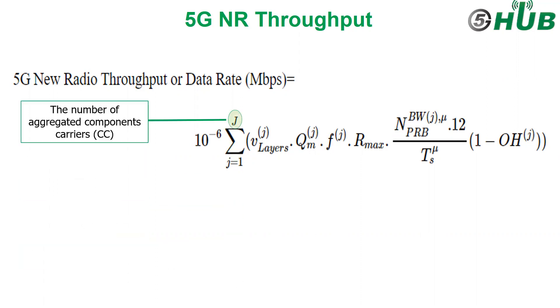J represents the number of aggregated components in a band or band combination. In 5G new radio, the maximum number of carrier components is 16 component carriers that can be merged to achieve higher bandwidth, which helps to improve 5G system throughput and performance. The maximum value is 16.